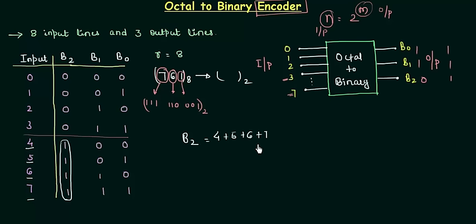Let's see for b1. b1 is high for these 2 cases when the input is 2, 3 and for the last 2 cases, so it is 2 or 3 or 6 or 7. And for b0, it is high when any odd input is high: 1, 3, 5, 7. So 1 or 3 or 5 or 7.